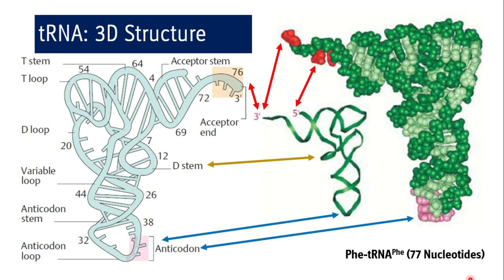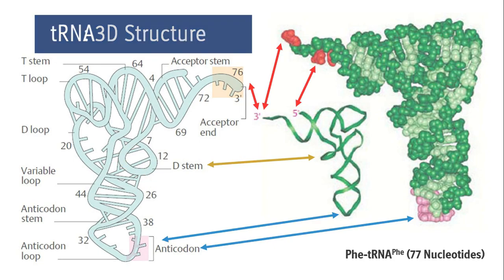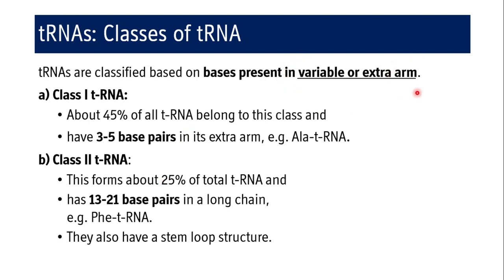The 3D structure of tRNA has a shape similar to the capital letter T. The 3' end, 5' end, acceptor, anticodon, D-loop, and the variable loop — which is very short — can all be identified. The example shown is the 3D structure of phenylalanine tRNA, which has 77 nucleotides. This gives an idea of the various loops, stems, and hydrogen bonding between nucleotides in the ribose-sugar backbone, which forms the double-stranded helical regions, with loops where there is no hydrogen bonding.